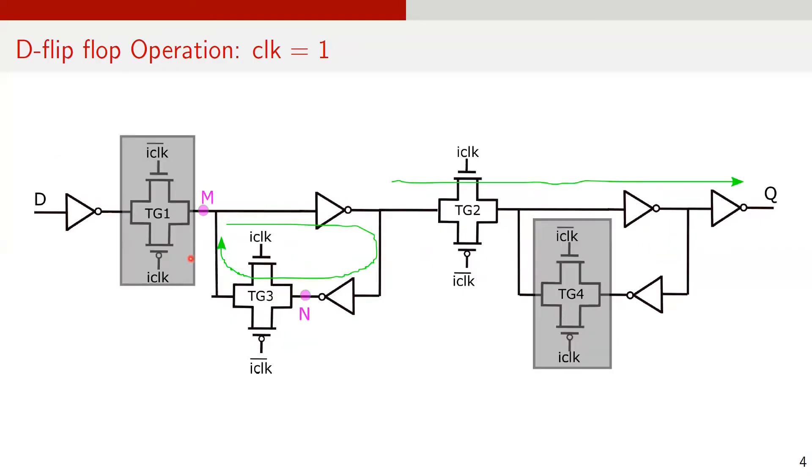For the case when clock goes from zero to one, I-clock transitions zero to one, while I-clock bar goes from one to zero. Since I-clock approaches one and I-clock bar approaches zero, this will turn TG2 and TG3 on while switching off TG1 and TG4.